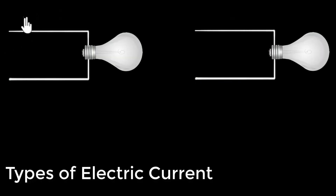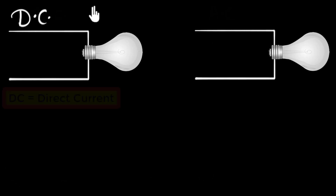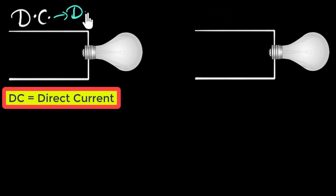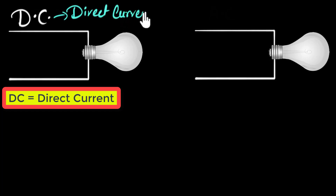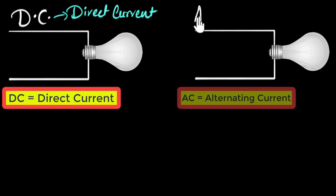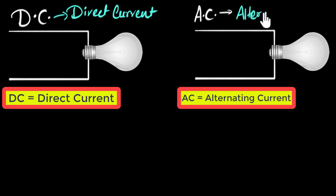Current comes in two flavors. One is called DC, which stands for direct current. And then the other one is called AC, which stands for alternating current.